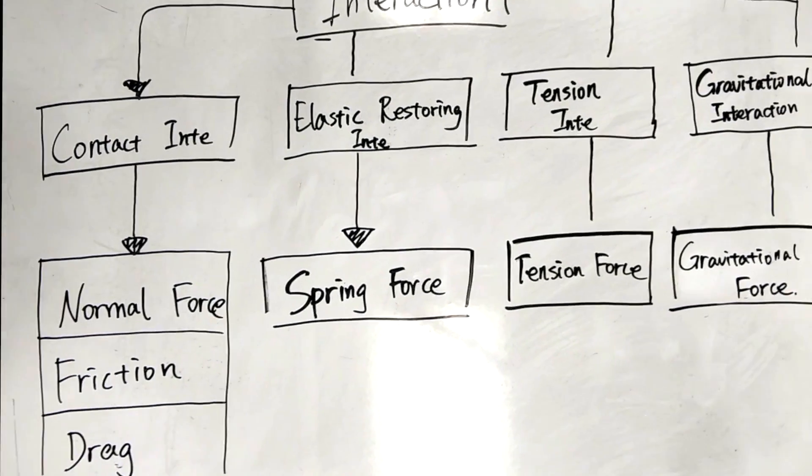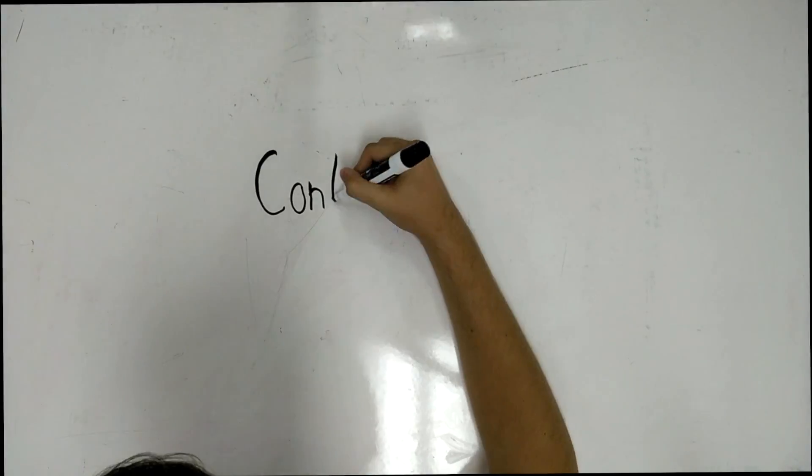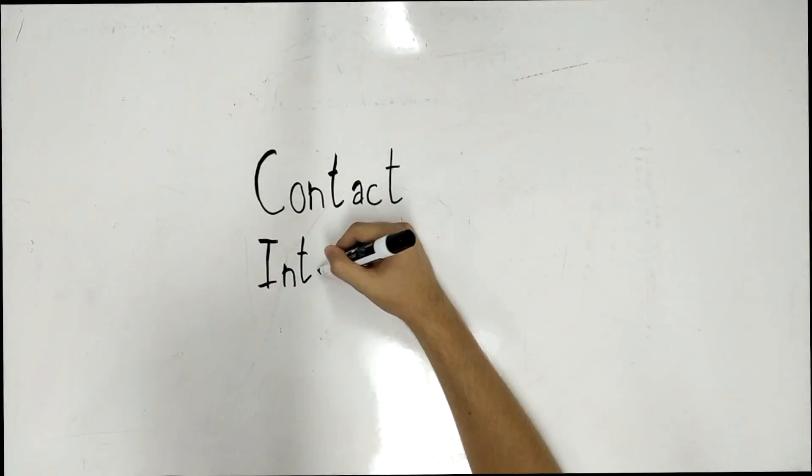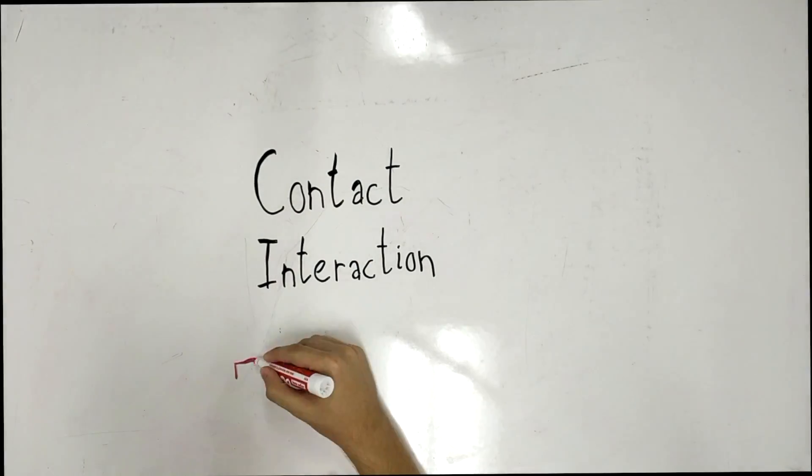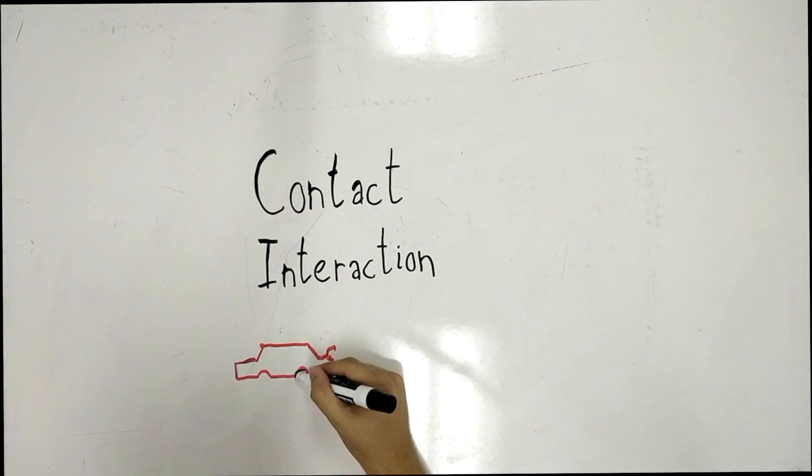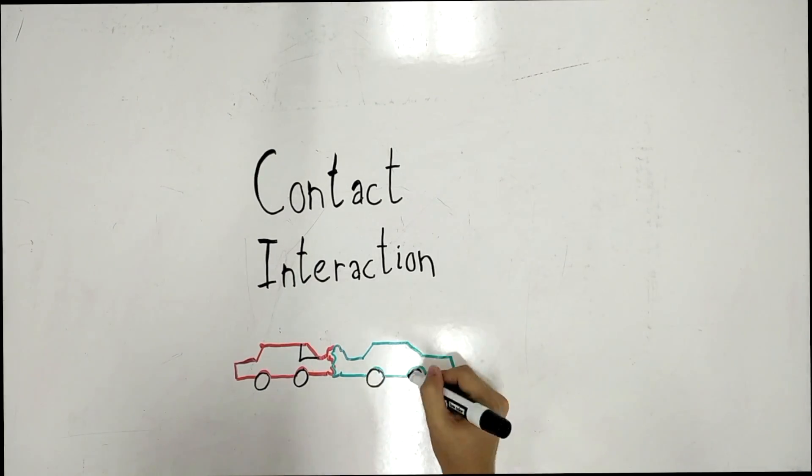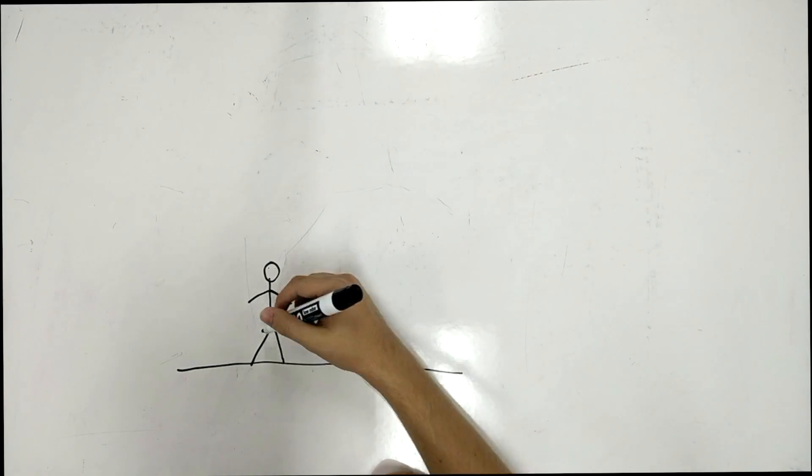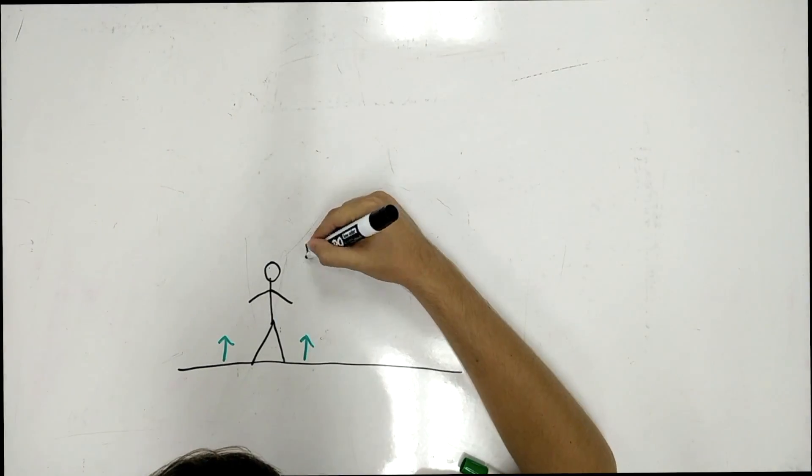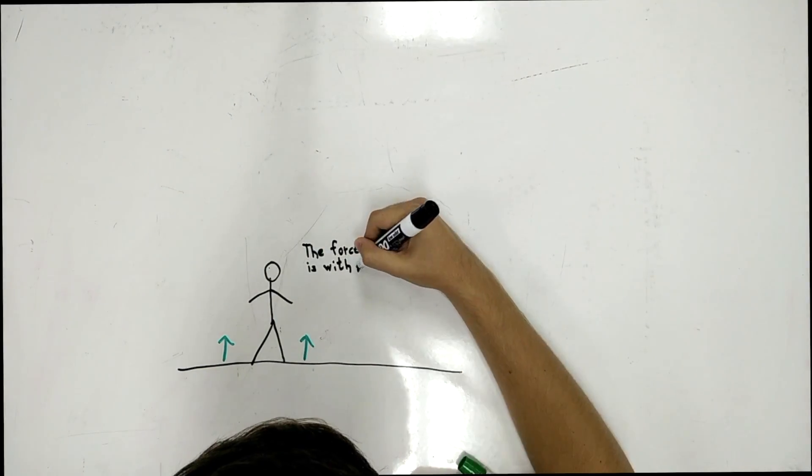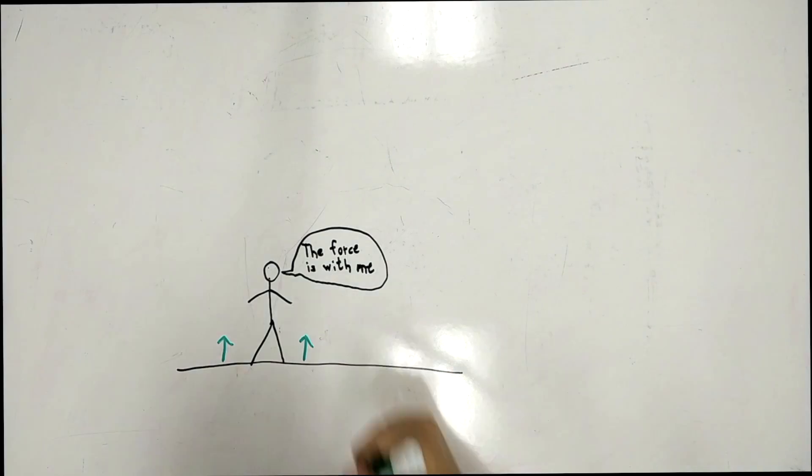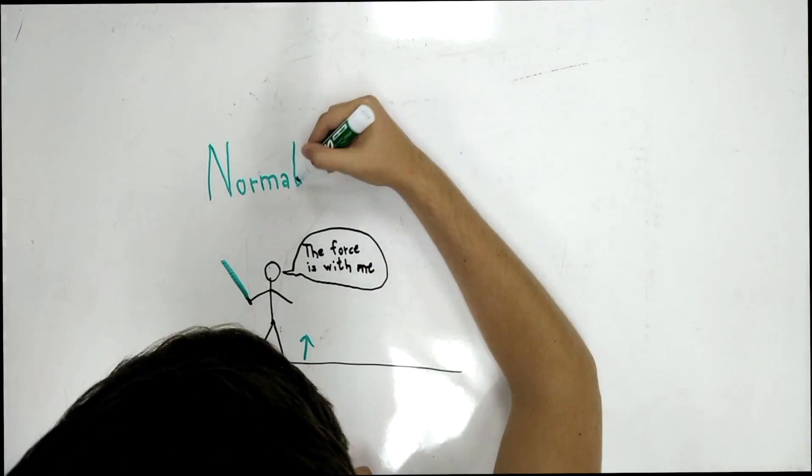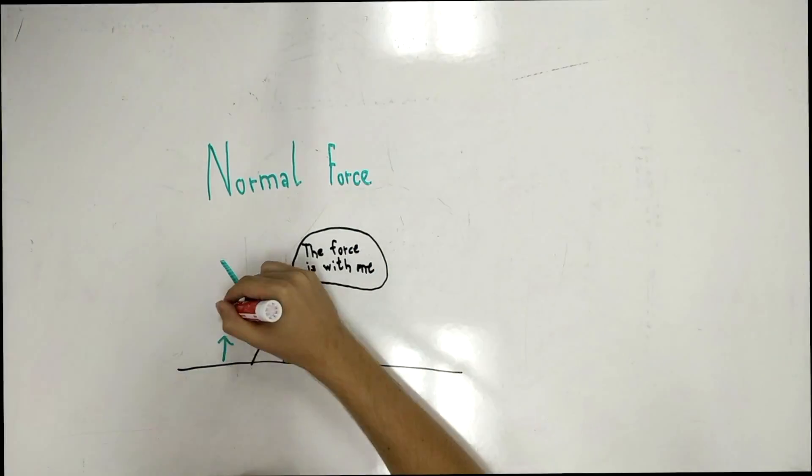Let's take a more in-depth look at each one of these specifically. Contact interactions occur whenever two bodies or objects are in contact with each other. A great example of this would be a car crash. The two objects collide and exert force on each other. The first example of this is normal force. Normal force occurs whenever a force acts upon an object. That object will exert an equal and opposite force back to the direction it received the force. This applies to both humans and Jedi.